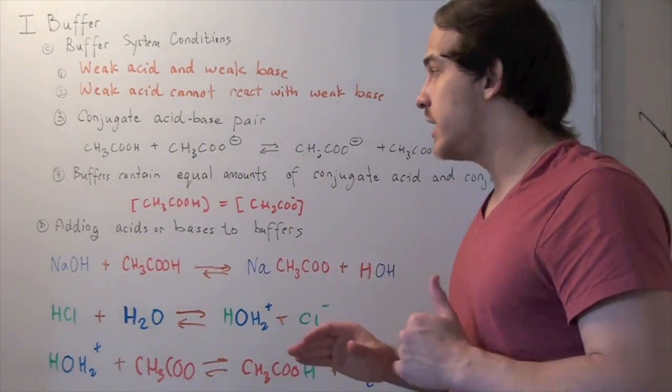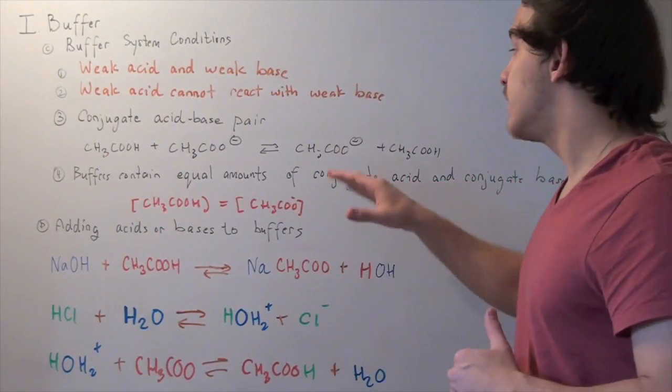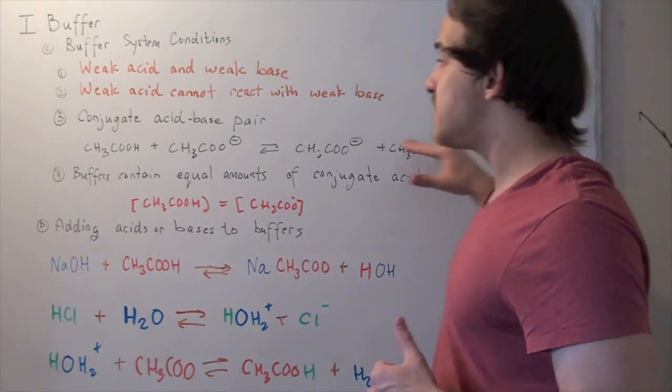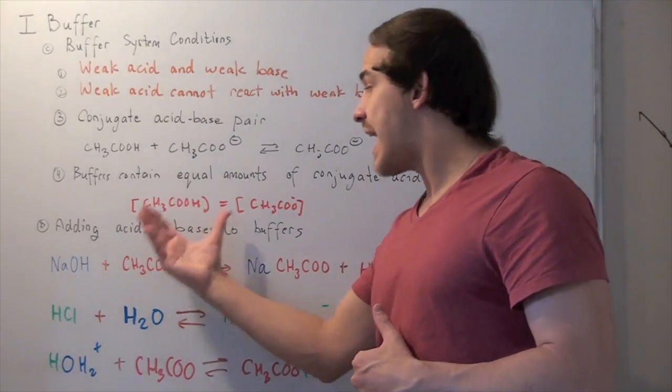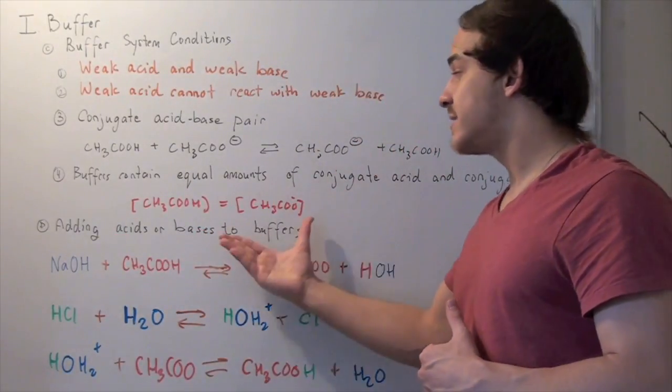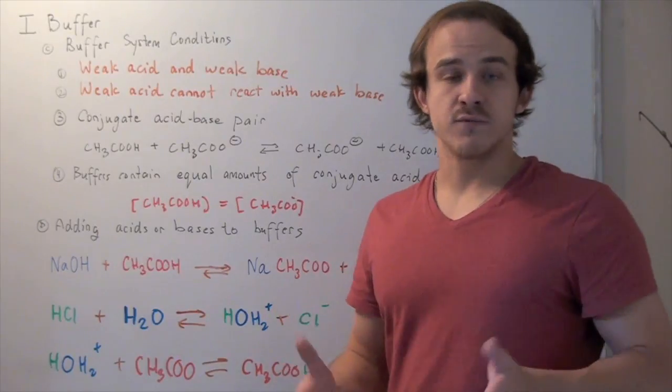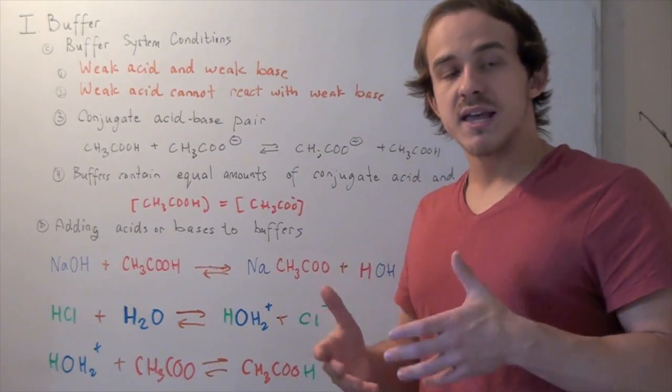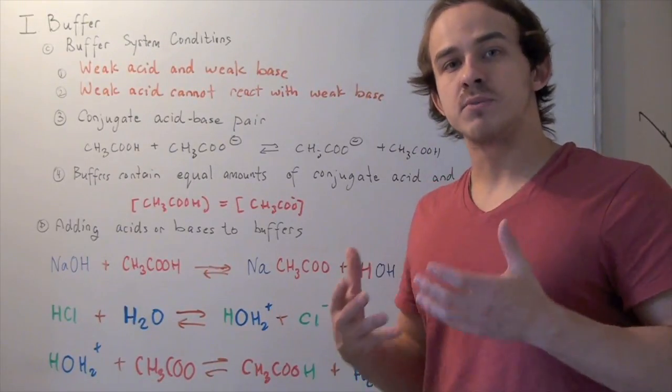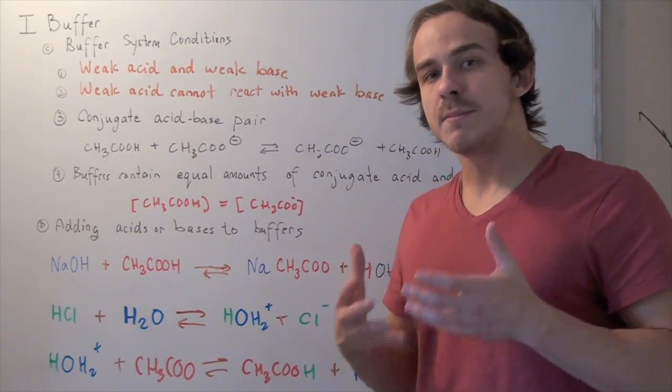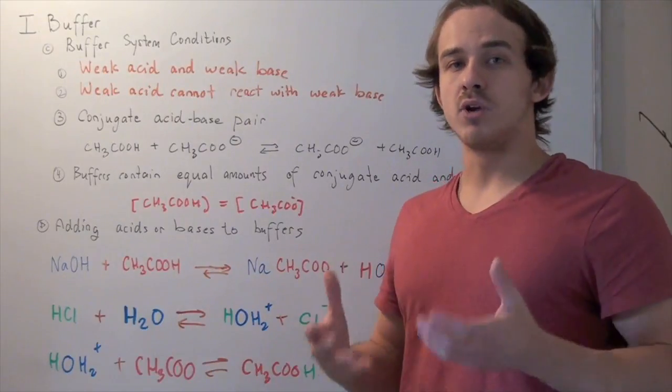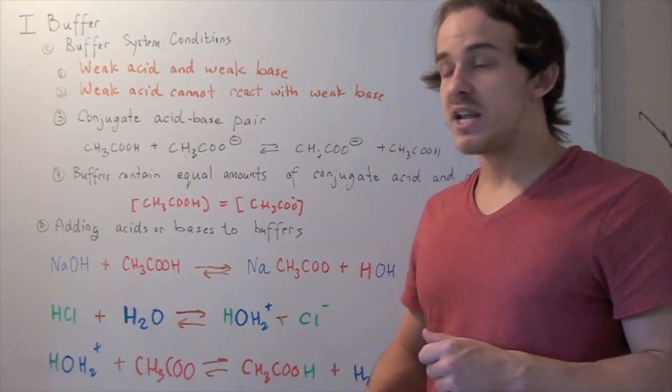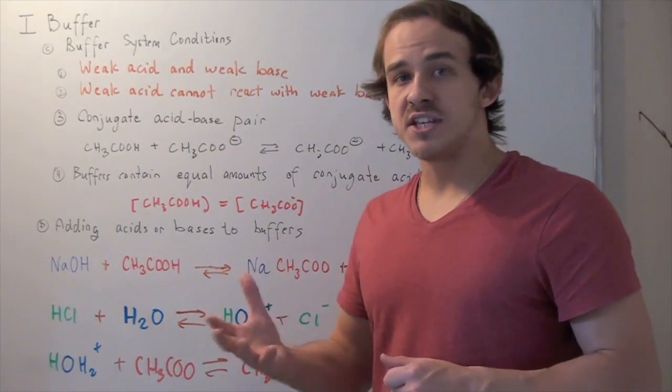Normally, buffers contain equal amounts of conjugate acid and conjugate base. For example, in this buffer system, we have the same amount of acetic acid as acetate ion. Some exceptions exist, like our blood, which has much more conjugate base than conjugate acid. That's because our body produces many more acidic byproducts than basic byproducts, so we need more base to neutralize the acid. Now let's see how these buffers work.